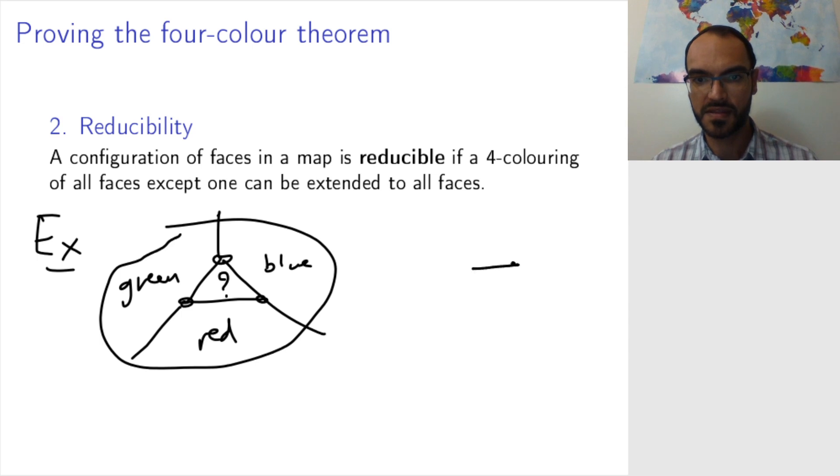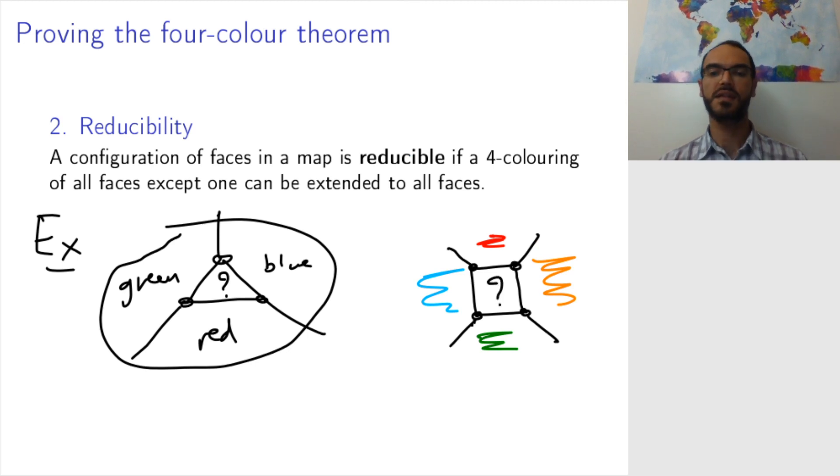Less obvious is this configuration. So now maybe I have here, red, here, green, here, blue, and here, yellow. So you might wonder how can I color this face?